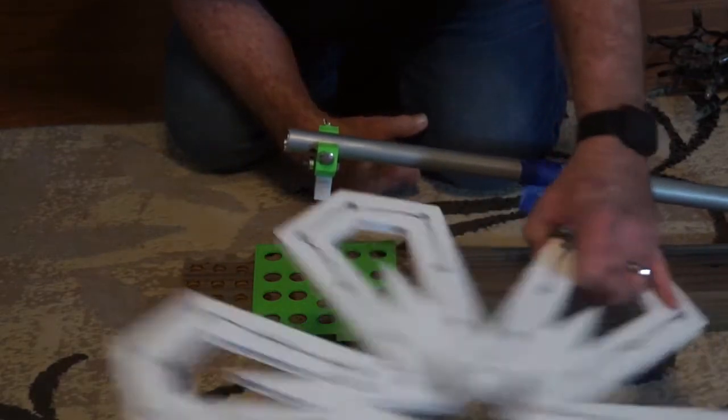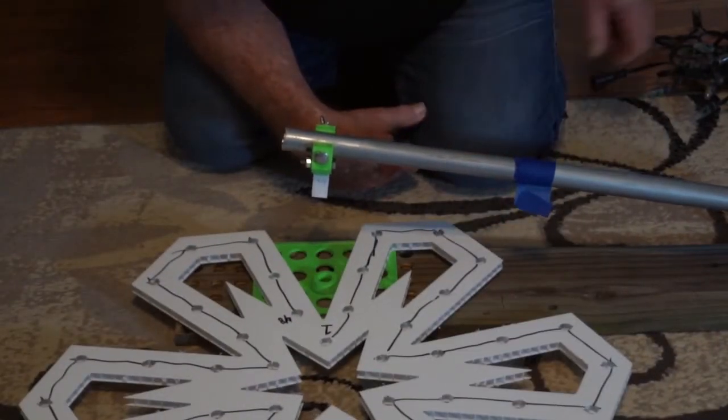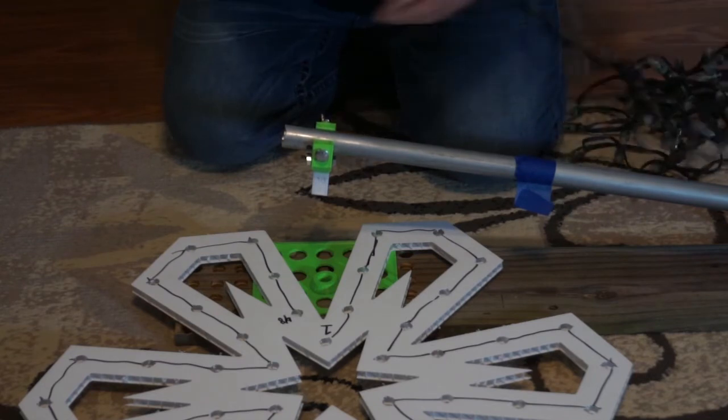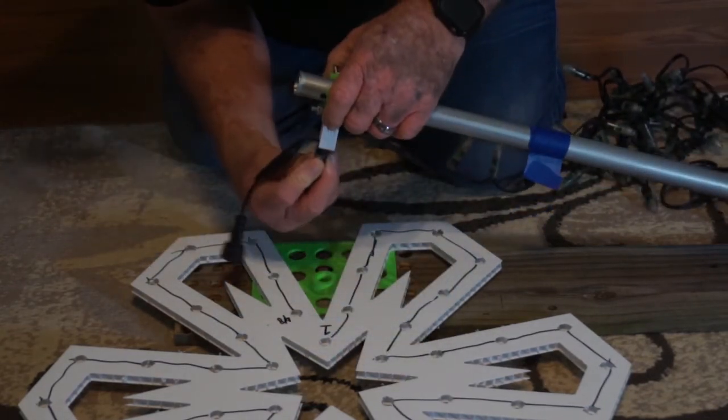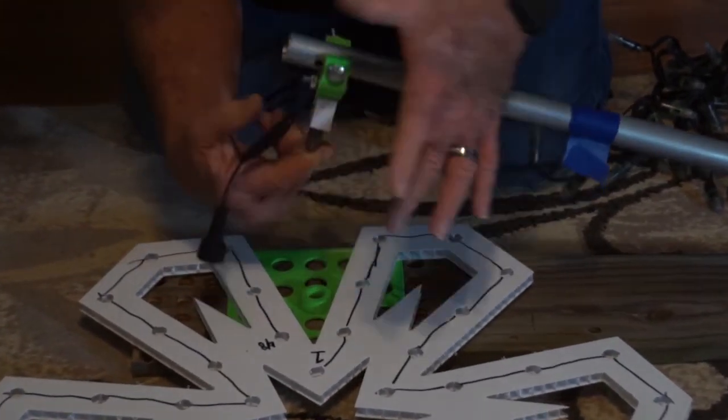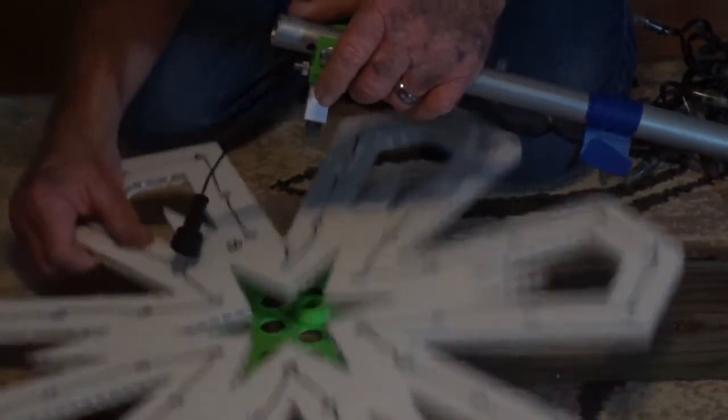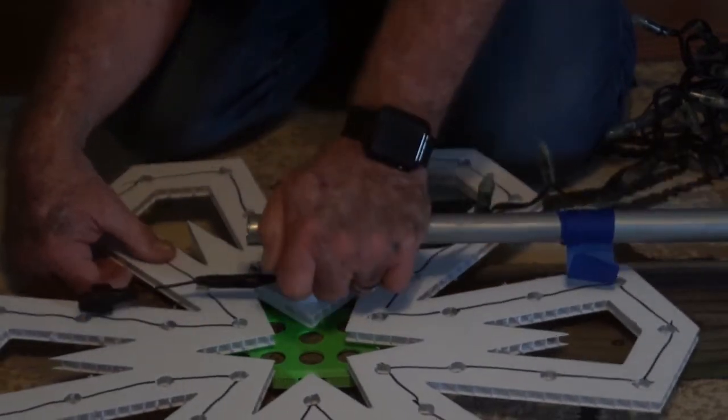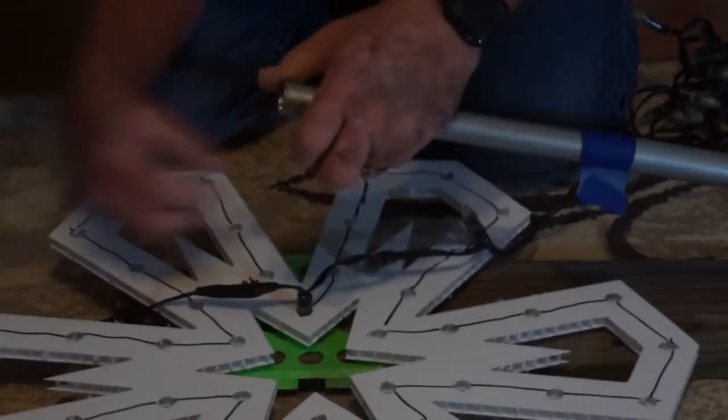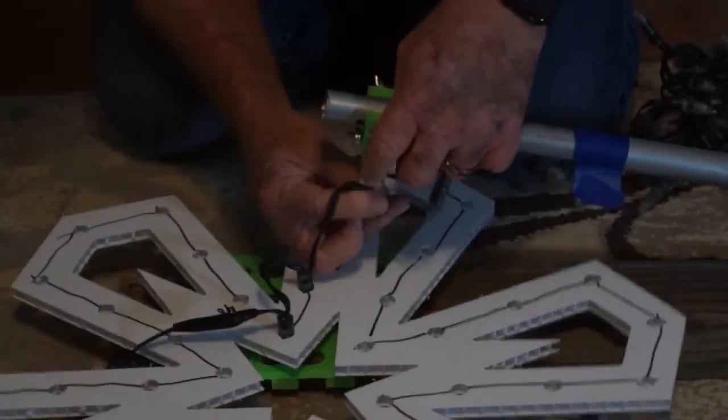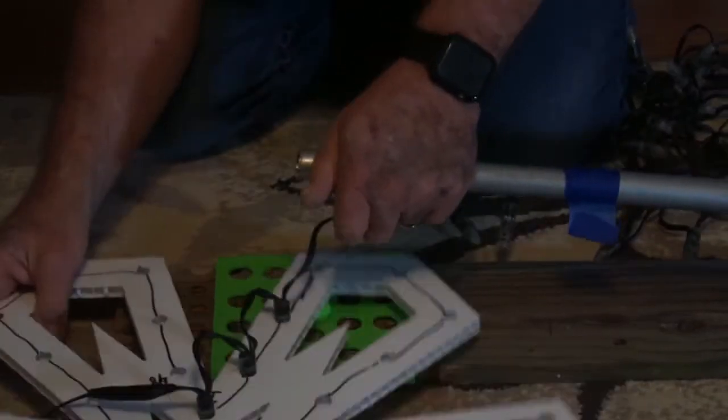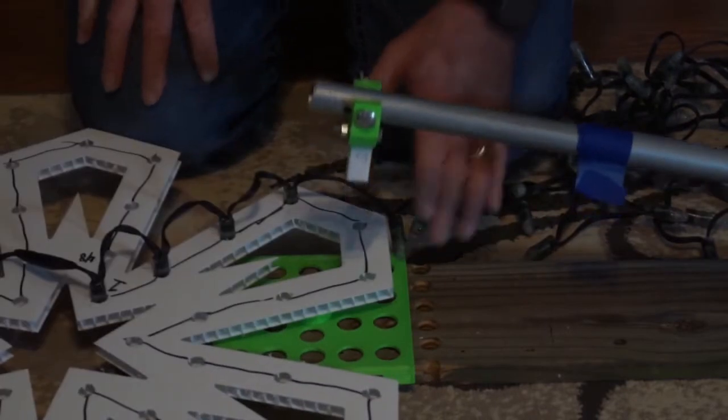Next thing is get your prop. In this case we're going to use a snowflake. And we're going to use the same process as before. Put your pixel in here. What I do on these here is I use my finger to hold the pixel in place. Line it up. Push it in. Just go to the next hole.